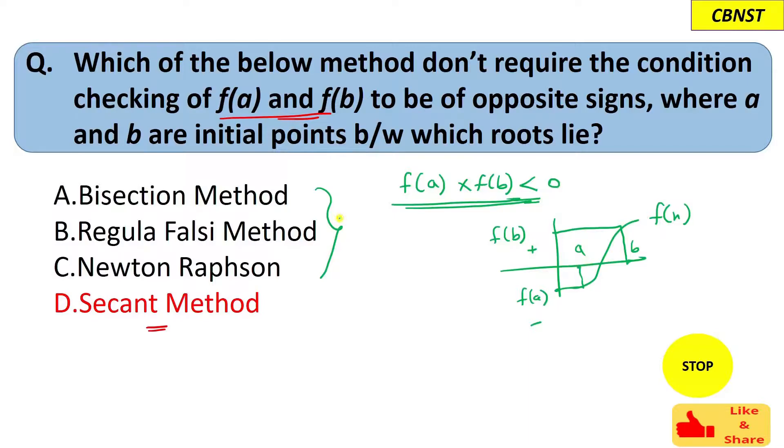When we choose two points such that f(a) and f(b) are of opposite sign, then we can apply bisection method, regula falsi method, and Newton-Raphson method. But secant method does not need this condition to be true.